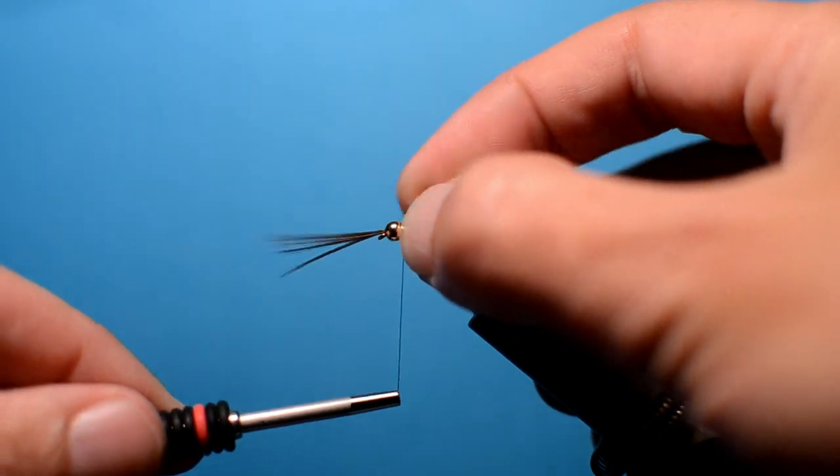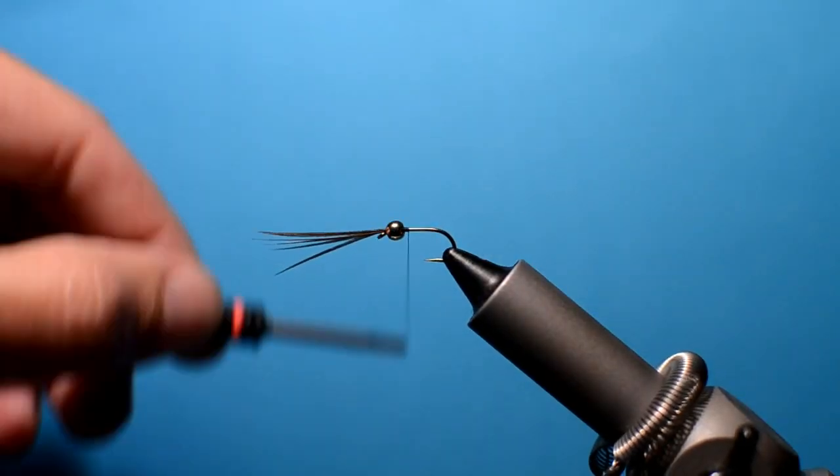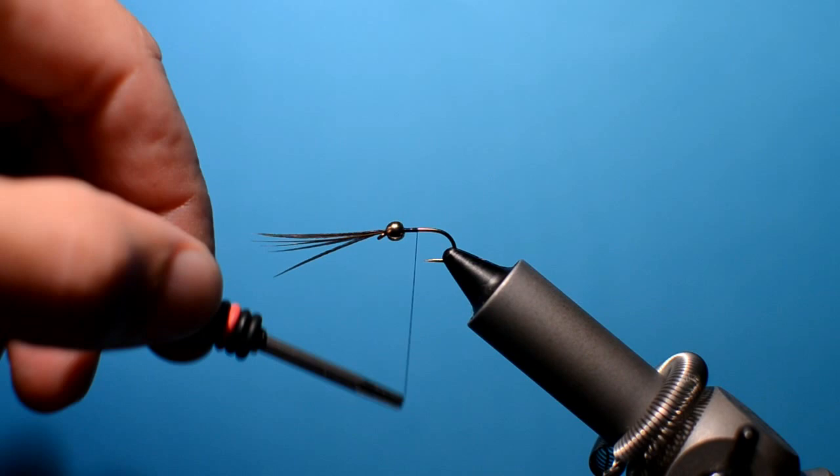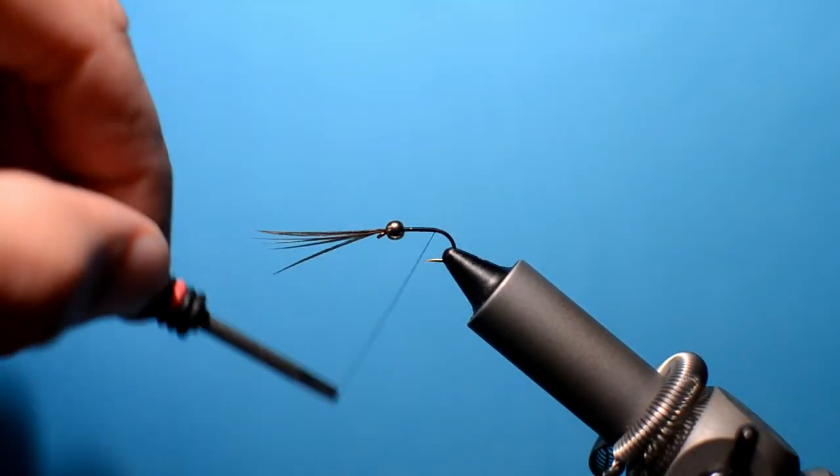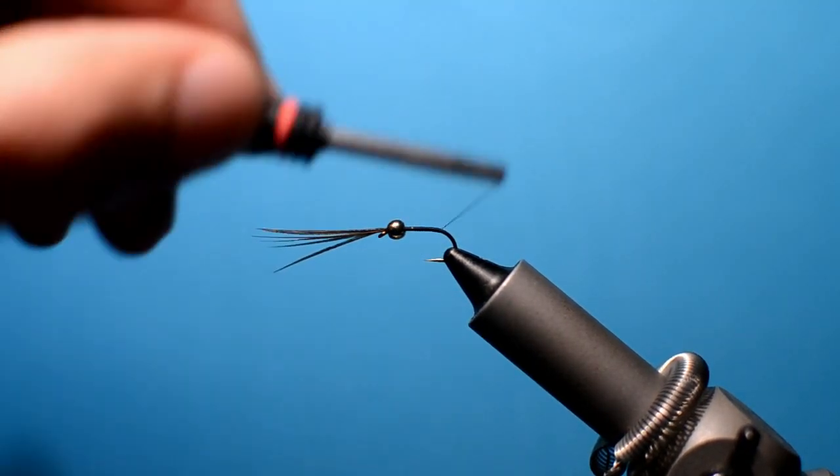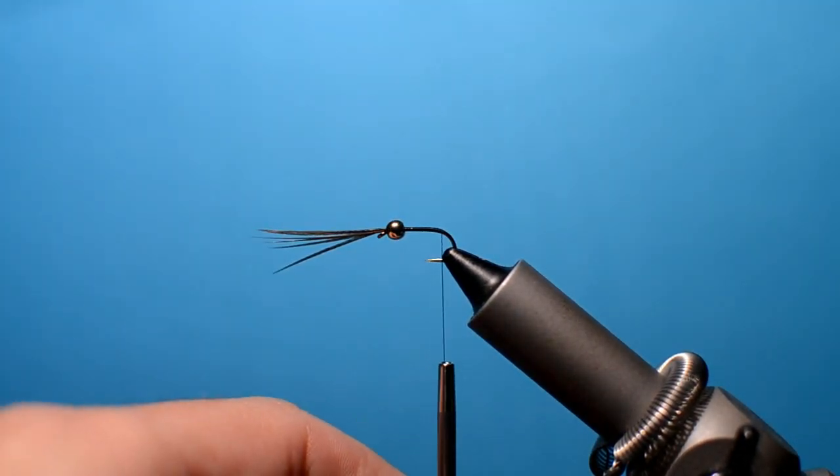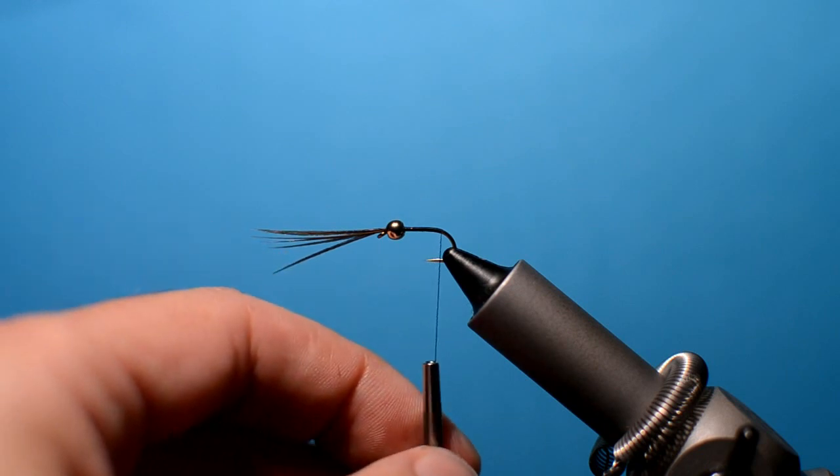Bring the thread behind the bead and then take it down the body. And we want to roughly end up opposite the barb. Somewhere there. That'll be fine.